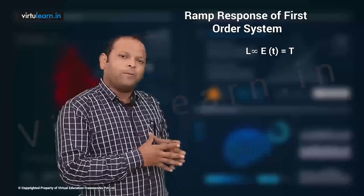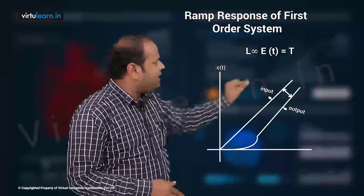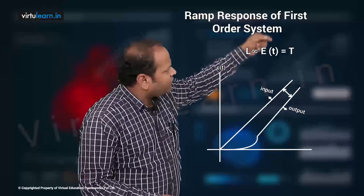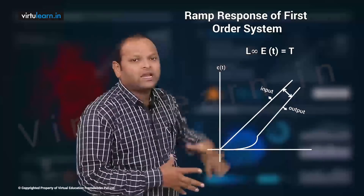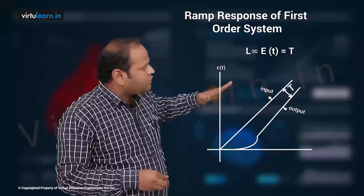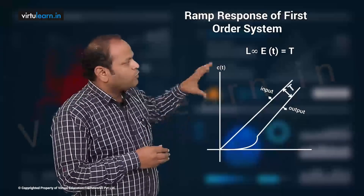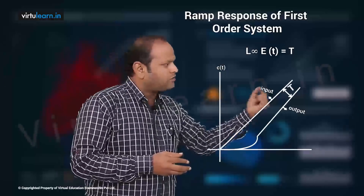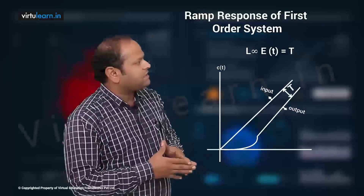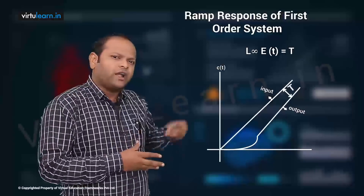Comparing input and output on the plot: the difference between input and output is T. If the time constant is small, the transient response is also very small and the output will be almost equal to the input — the steady state error will be very less. If the time constant is large, it takes a very long time to reach steady state, and there will be a large gap between input and output.